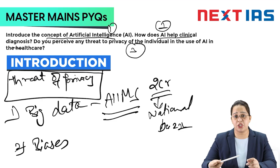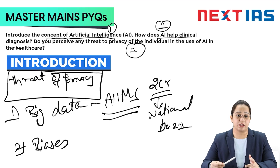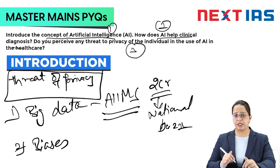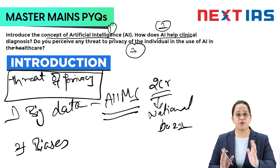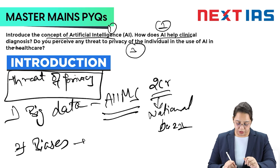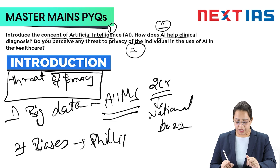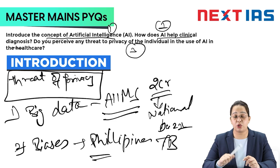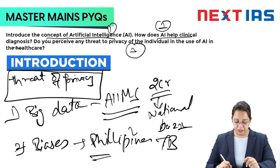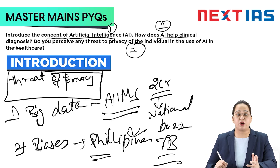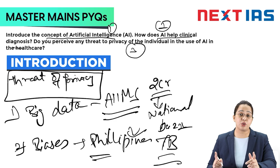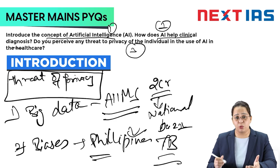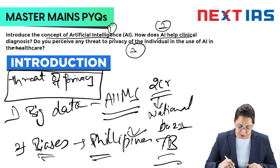The second point is biases. If an organization or institution has data of a population, biases might develop. For example, a hospital hiring people might have data showing that the Philippines has a high incidence of tuberculosis. A bias might develop where the hospital becomes reluctant to hire people from the Philippines — because of predisposition to tuberculosis — even though the individual currently does not have the disease. So biases may develop from healthcare data.